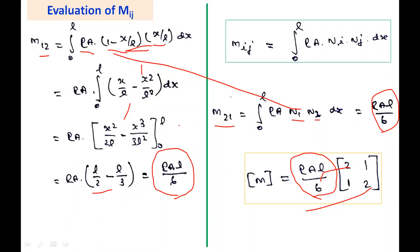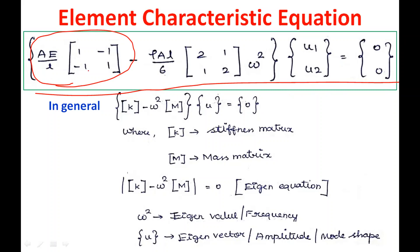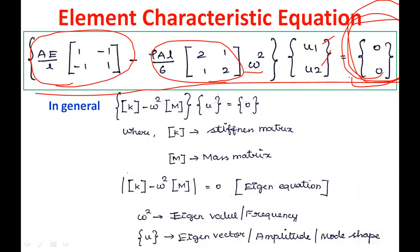After obtaining the mass matrix, we can establish the element characteristic equation for the longitudinal vibration problem. It is: (EA/l)·[1, −1; −1, 1]·{u1; u2} minus ω²·(ρAl/6)·[2, 1; 1, 2]·{u1; u2} = {0; 0}. The right-hand side is zero because this is free vibration. In the general form, the equation is [K − ω²M]·{U} = {0}.